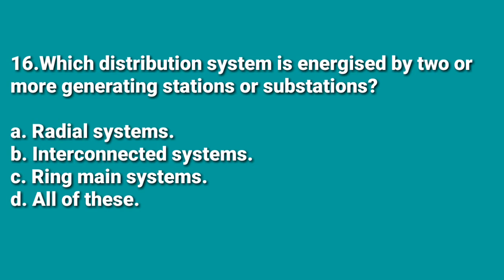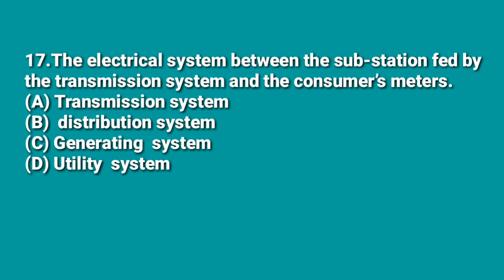The next question: which distribution system is energized by two or more generating stations or substations? A: radial, B: interconnected, C: ring main system, D: all of the above. The correct answer is B, interconnected system, because two or more generating stations are connected together in an interconnected system.